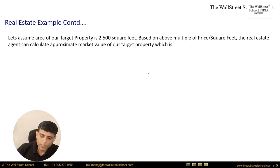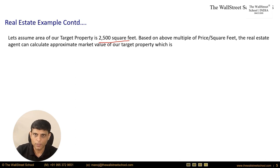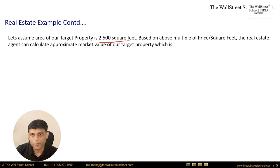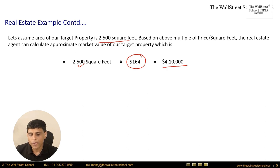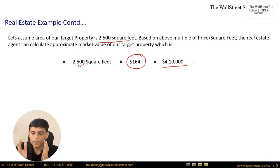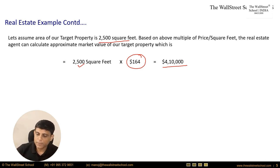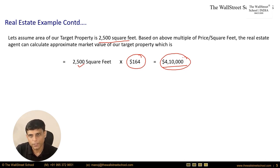Our target property has an area of 2,500 square feet. Based on our assessment, comparable properties were previously sold at an average of $164 per square foot. The estimated value of our target property is 2,500 × $164 = $410,000. This value is comparison-based — decided by how similar properties were sold in the market. That is relative valuation.